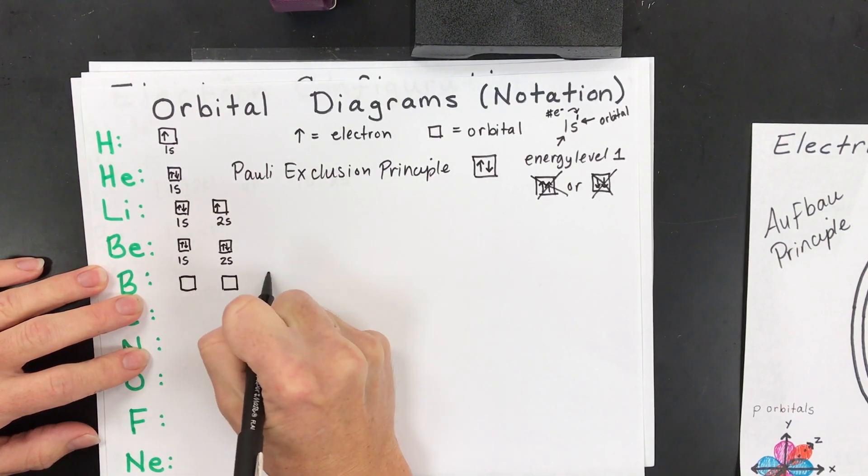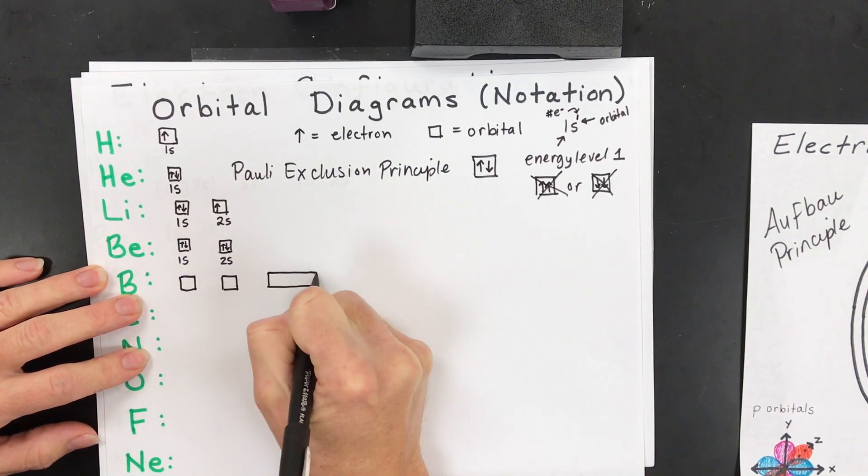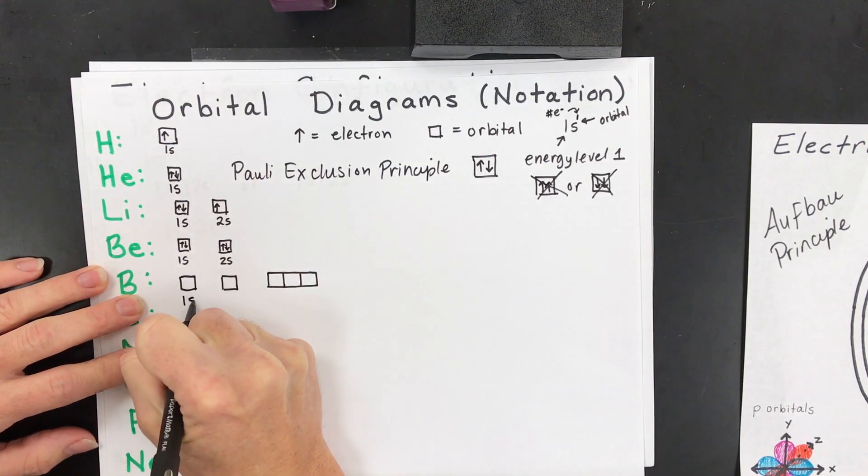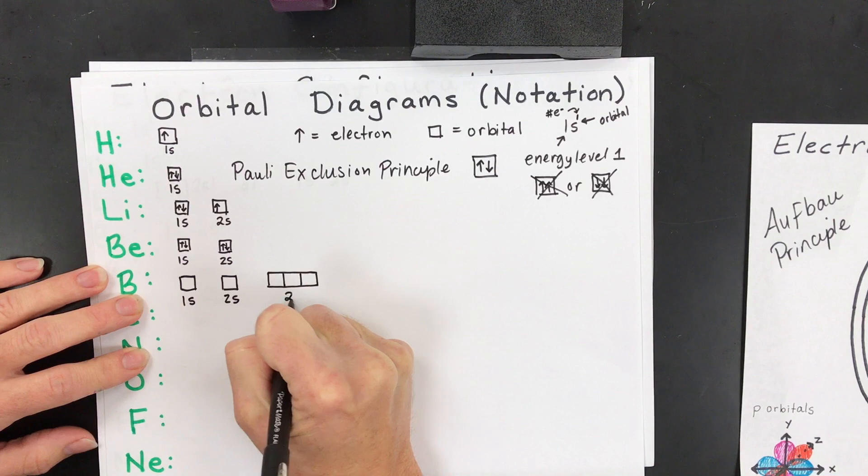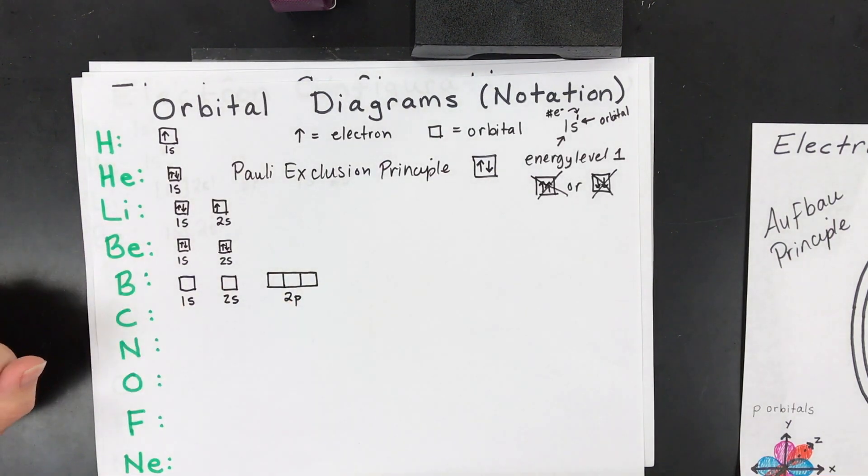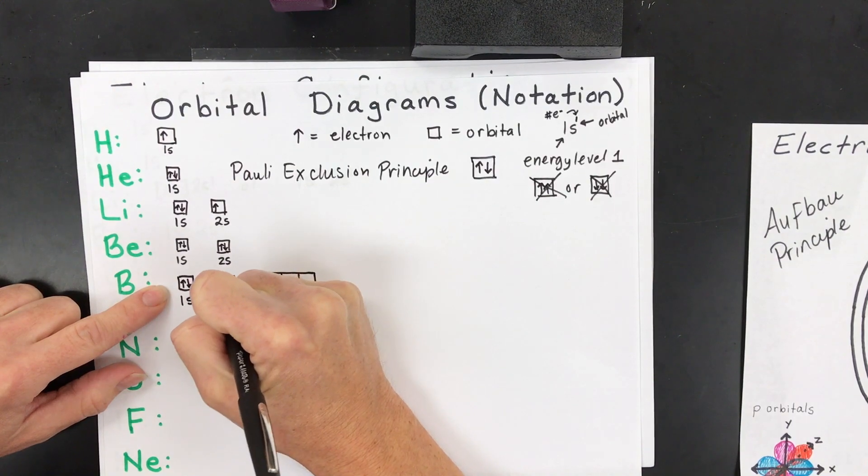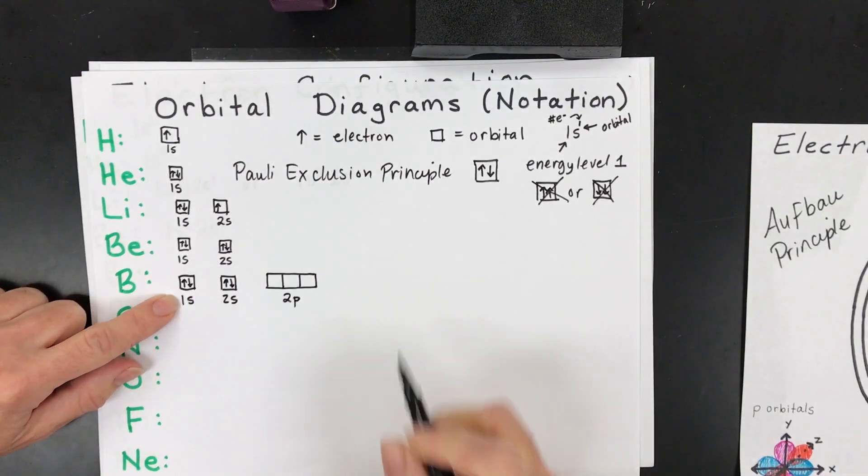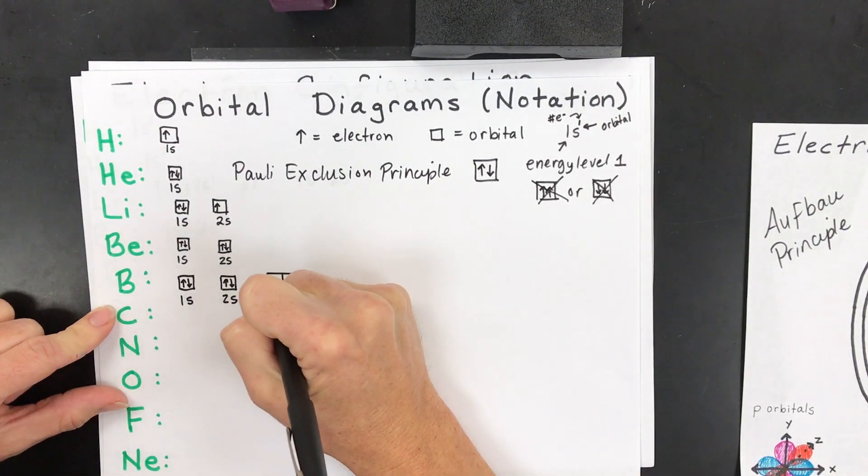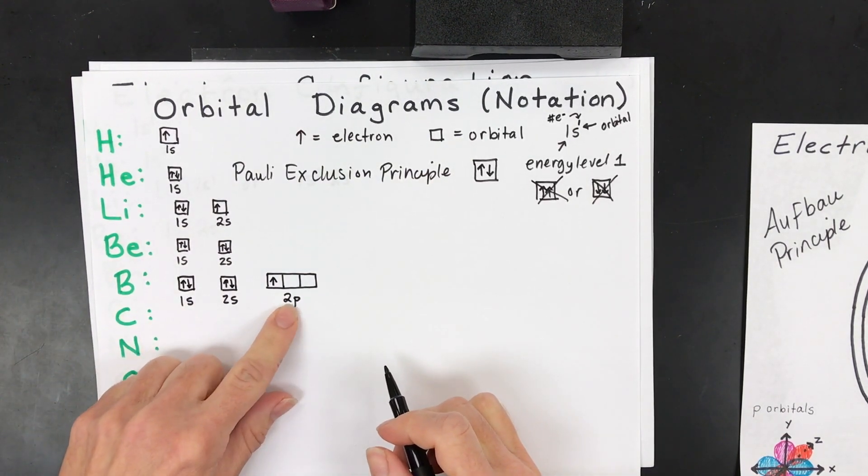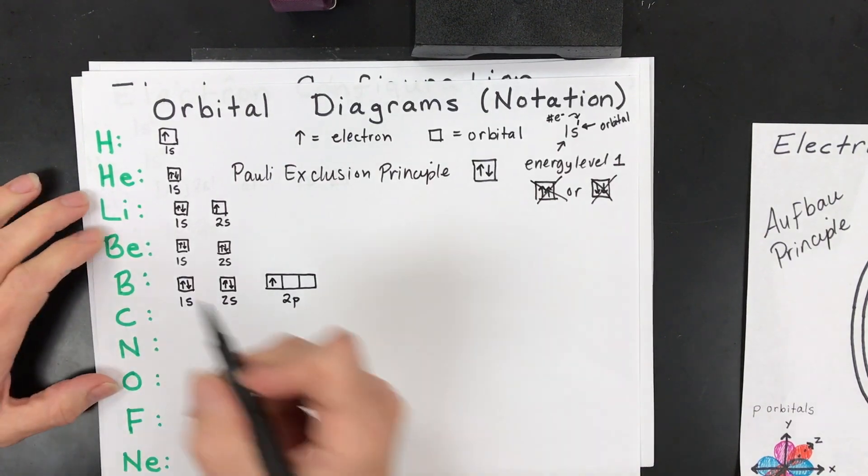But p-orbitals, there's going to be three of them because they face in the x, y, z direction. So they're going to be called a sublevel. So right away, you're going to want to draw all three boxes, even though we won't need them all. Because again, we only have five electrons. So one, two, three, four. Pair them opposite because of Pauli. And then that electron is going to occupy its own new sublevel, which is the p-sublevel. But it's still an energy level 2.